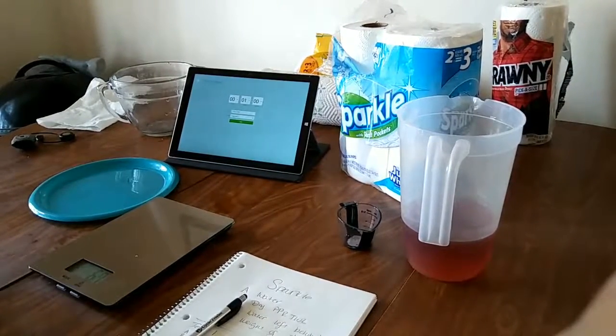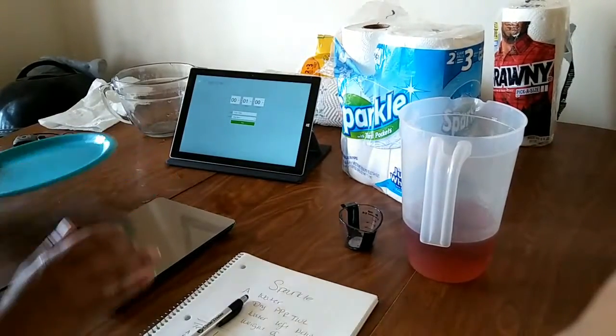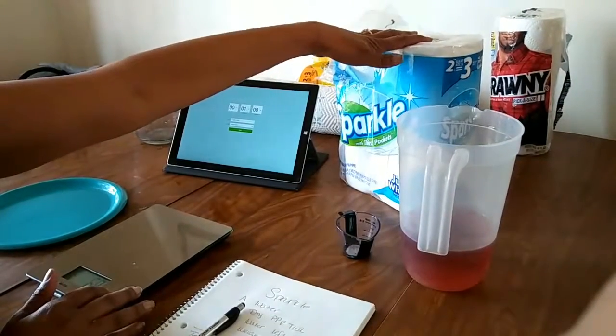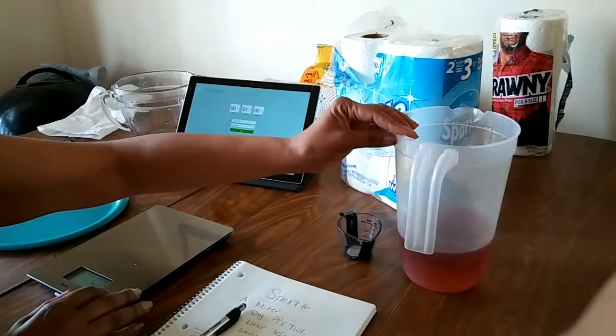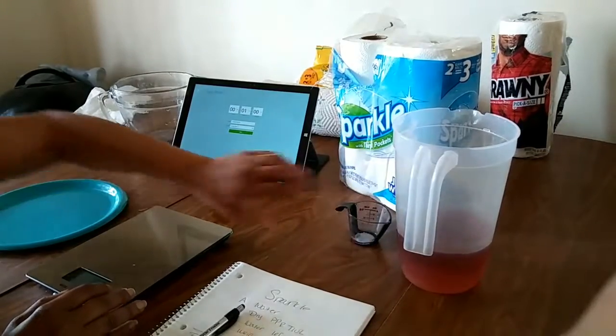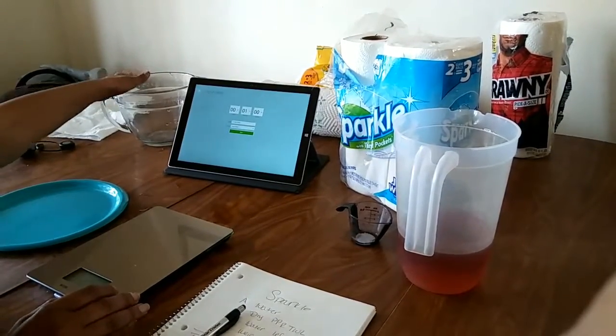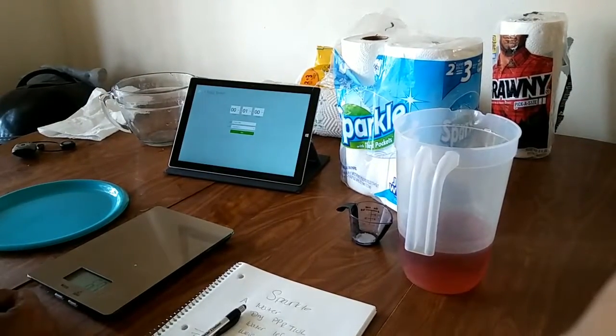For this experiment I will be using a hard plastic plate, a digital scale, Sparkle paper towels, some colored water which is purple so that we can see it, and a two milliliter measuring device. I will also be using a bowl for product disposal, a timer, and of course I'll be recording my results as we go.